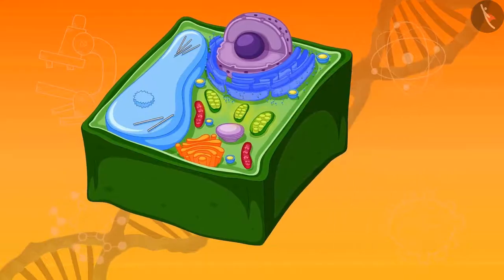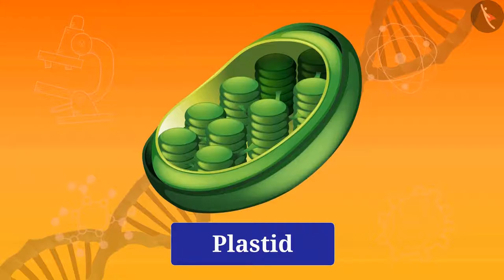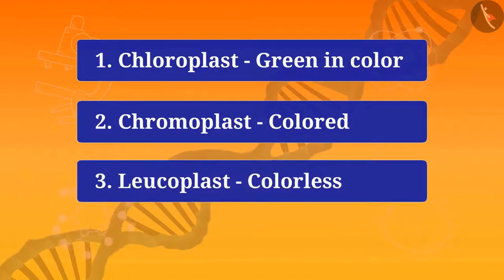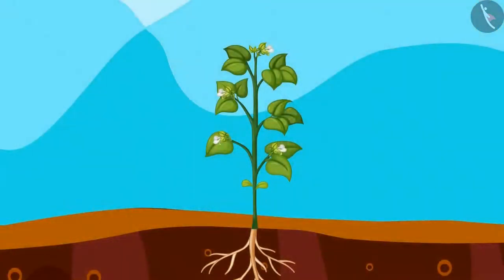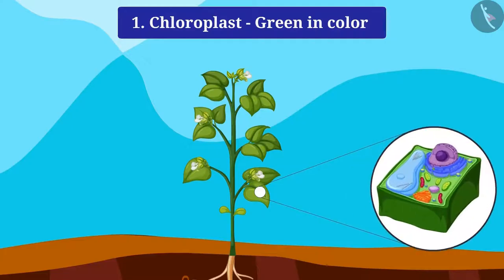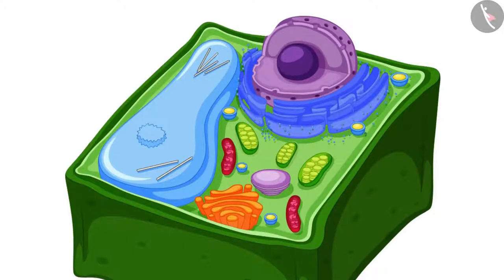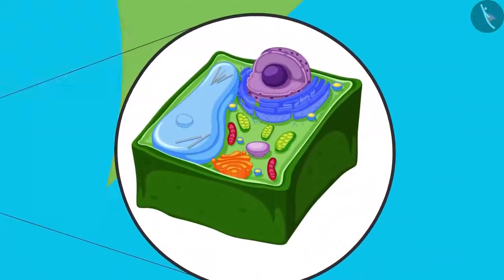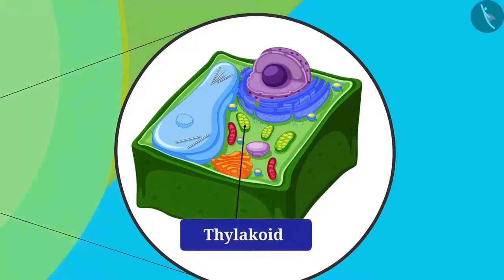Next we will learn about plastids, which are present only in plant cells. There are three types: chloroplast, chromoplast, and leukoplast. Chloroplast is green in color, chromoplast is colored, and leukoplast is colorless. Chloroplast contains the green pigment called chlorophyll, which gives green color to plants. It also helps in photosynthesis. It is a double membrane organelle whose inner structure consists of layers of membranes with thylakoids located in a fluid called stroma.